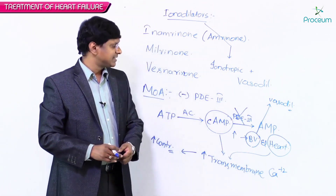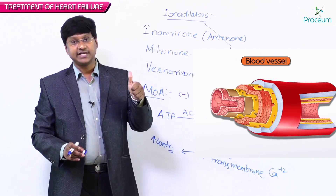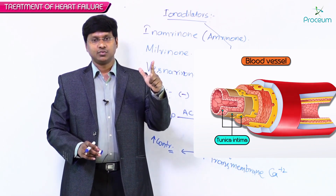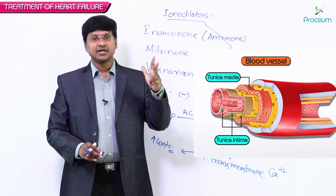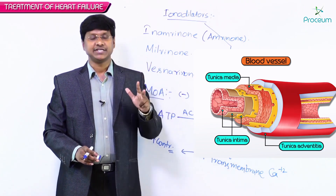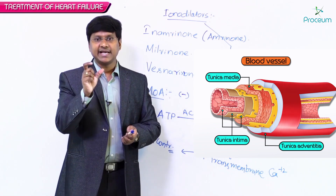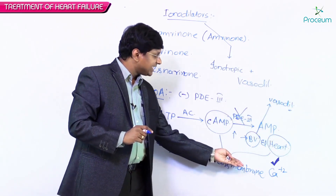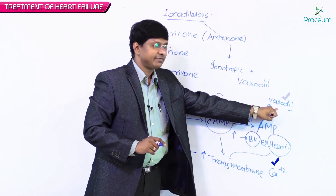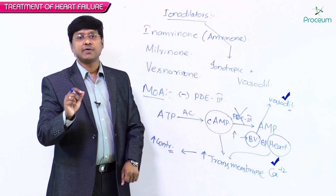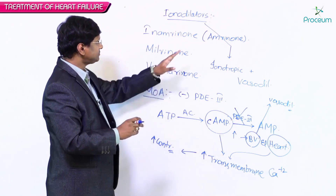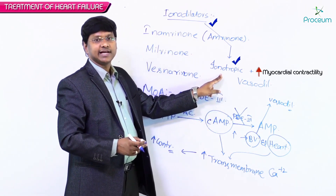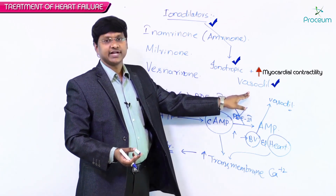Within the blood vessel there are 3 layers: the innermost layer is tunica intima, the middle layer is tunica media, and the outermost layer is tunica adventitia. Within the tunica media we have the vascular smooth muscle. If the calcium level increases within the vascular smooth muscle, there will be vasodilatation. This is the mechanism by which inodilators cause increased myocardial contractility and vasodilatation.